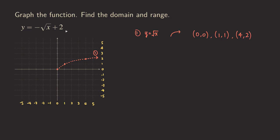Hello everyone, it's Wilson here. Today let's talk about graphing this function y equals negative square root of x, plus 2. The way we are going to do this is to first graph the parent function y equals square root of x, without the negative sign and without the plus 2, and then apply two transformations to the graph of the parent function to obtain the final graph.